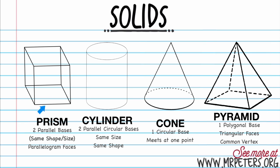So again to review: we have a prism, which is named by the base — you could have a rectangular prism or a square prism. We have the cylinder with parallel circular bases. Then you have one circular base that makes a cone. And finally you have a pyramid which meets at one point, and the base is a polygonal base.